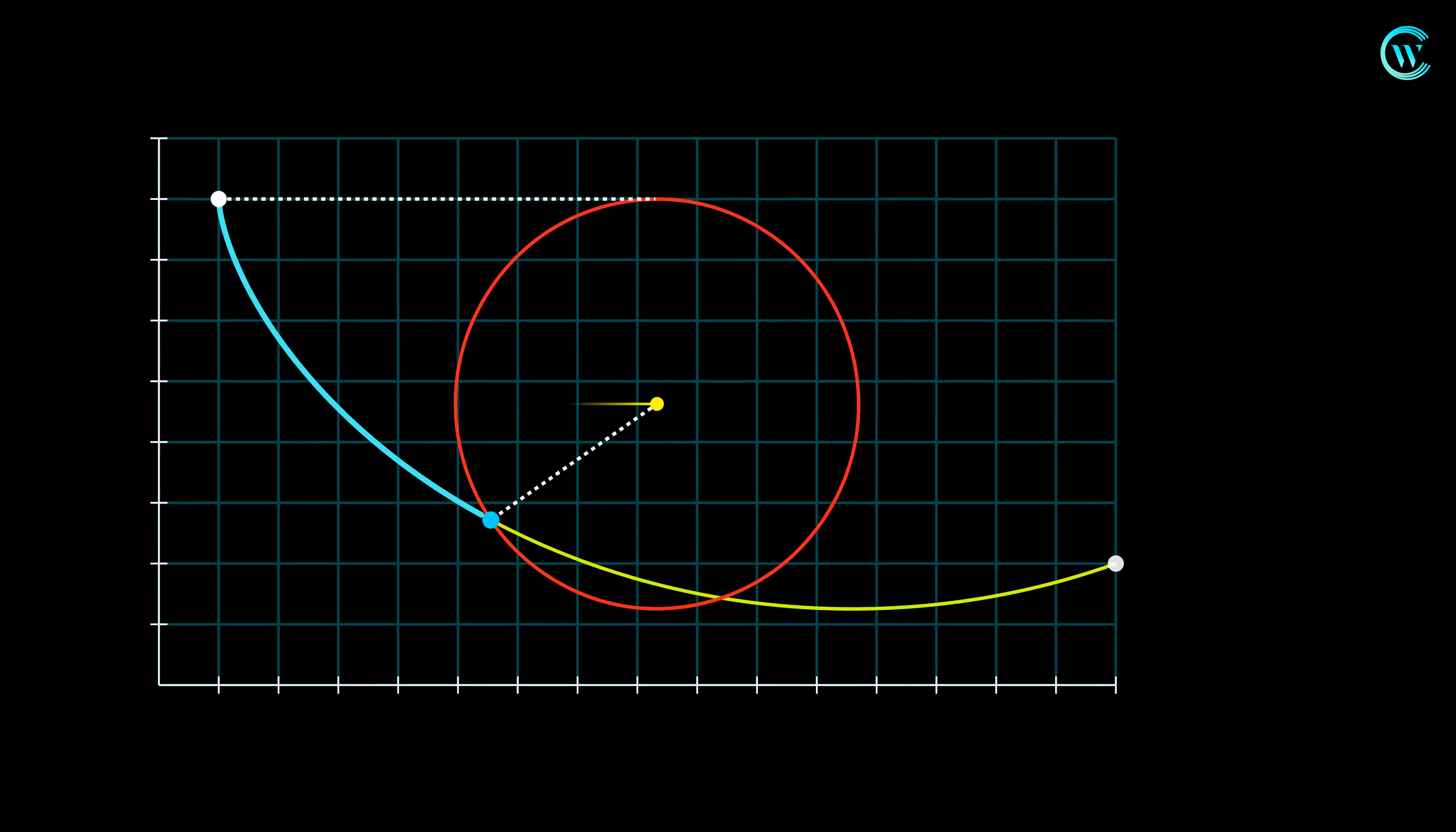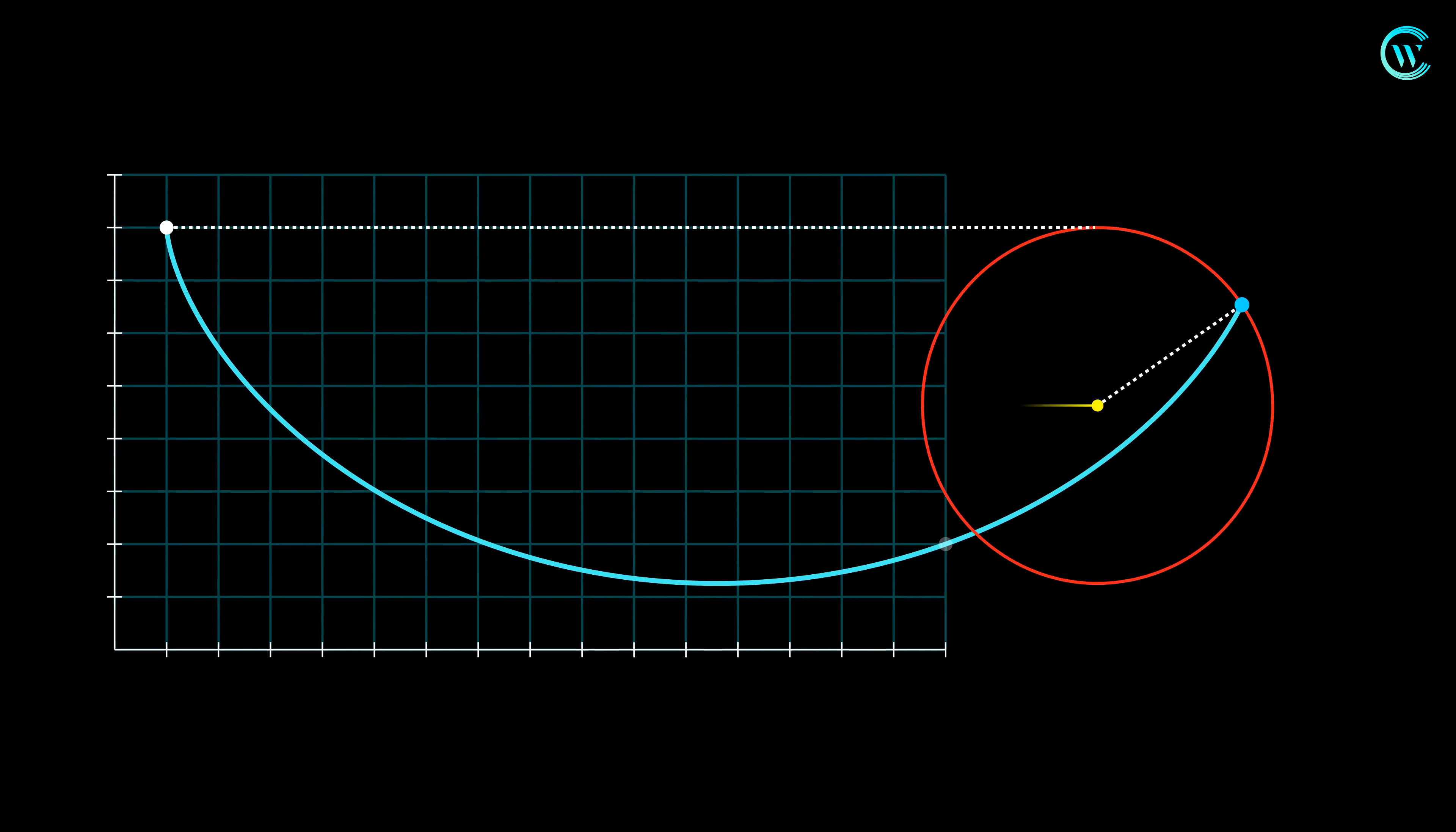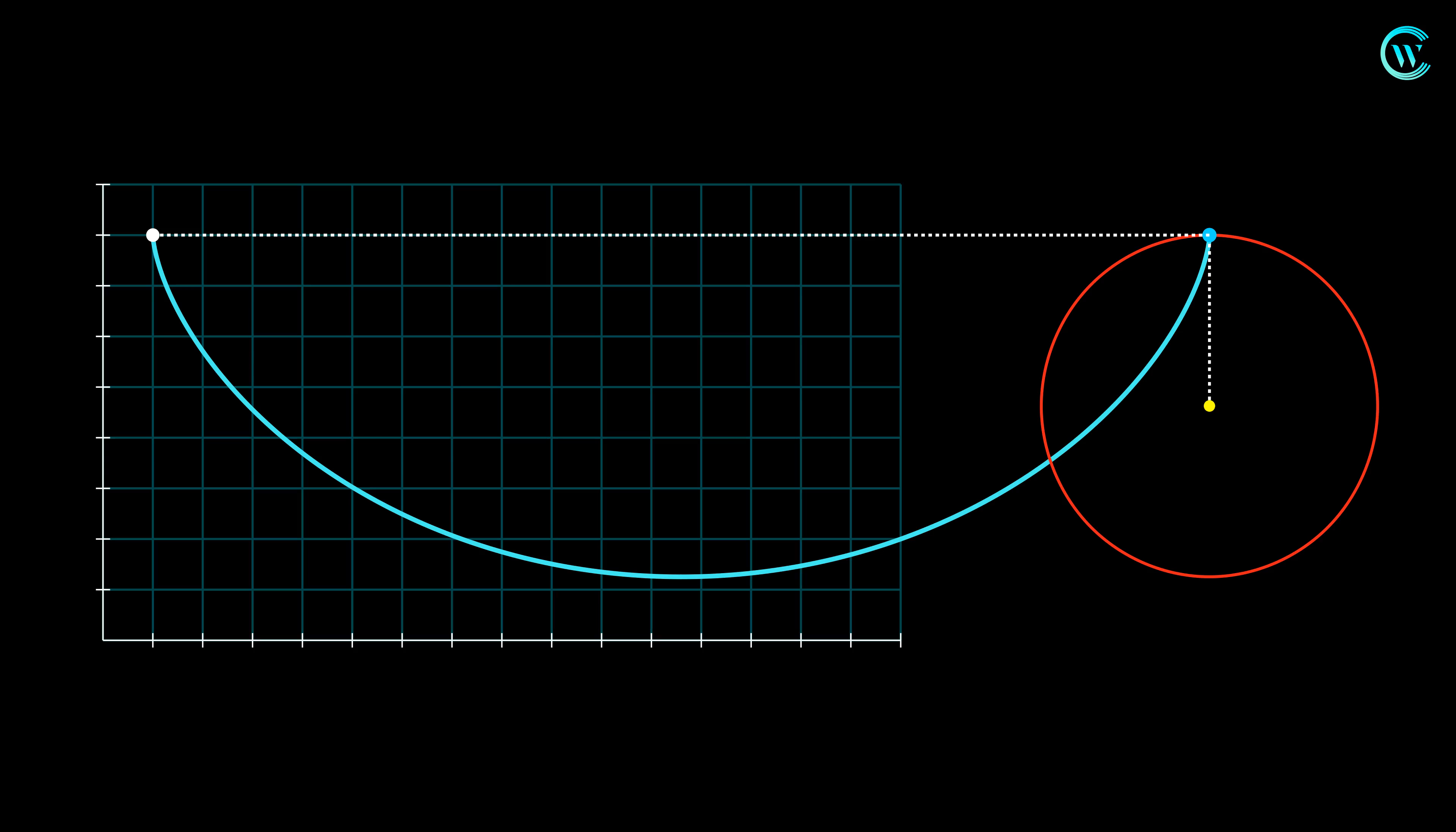A cycloid is drawn along the path traced by a fixed point on the circumference of a circle that rolls along a straight line without slipping. It is also expressed in the form of a parametric equation.